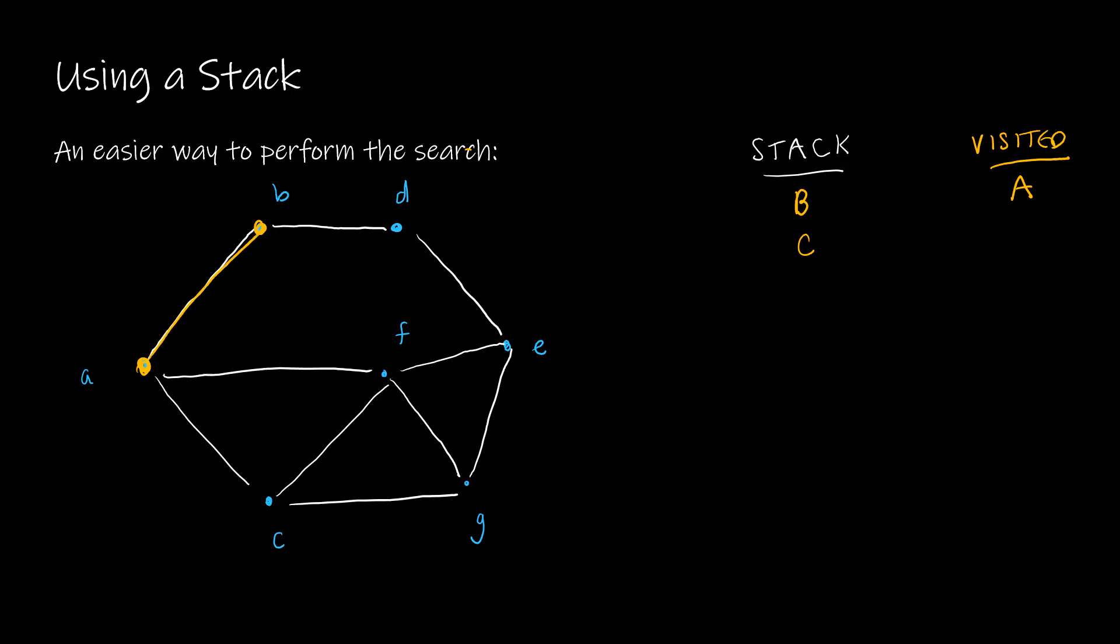So now B is going to leave the stack, and I will say that I have visited B. Now C is still in the stack, meaning it's still something I can get to. But remember, our algorithm says now you're going to go from B.